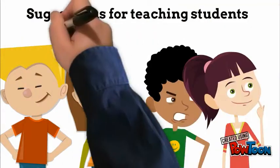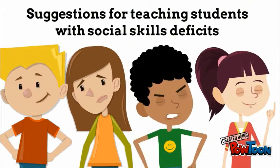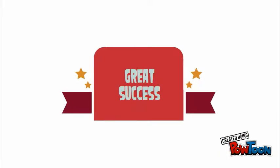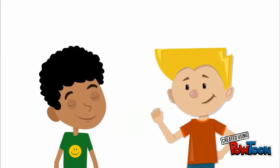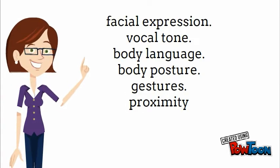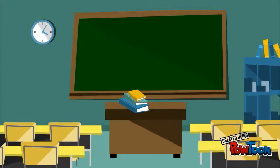Suggestions for teaching students with social skills deficits to function successfully in school. Students must learn how to interact appropriately with their peers, teachers, administrators, and school staff. Teachers can provide support in the classroom for these students. A supportive classroom environment where social skills are explicitly taught can help students learn and understand social boundaries and cues.